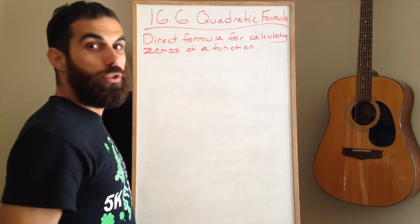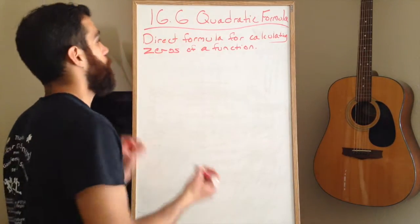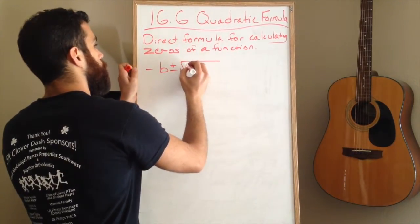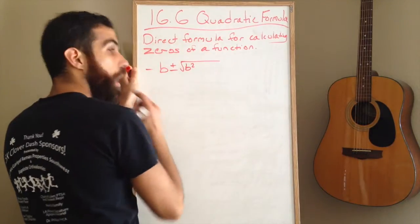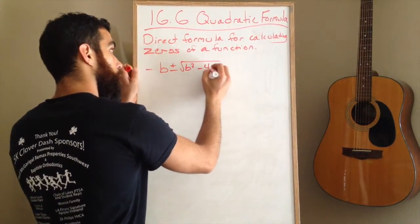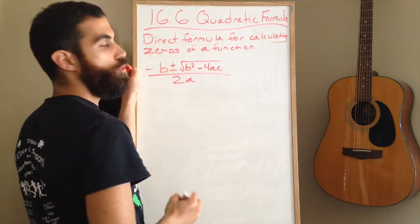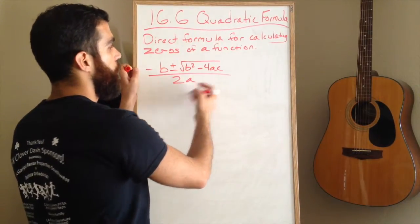Alright, so here's the quadratic formula. Write it down with me. Negative b plus or minus the square root of b squared minus 4ac, and all of that is the numerator over 2a.